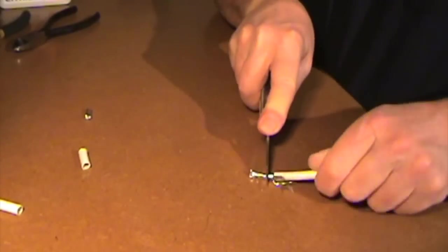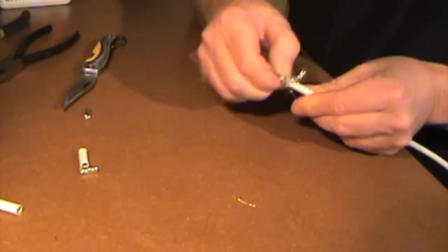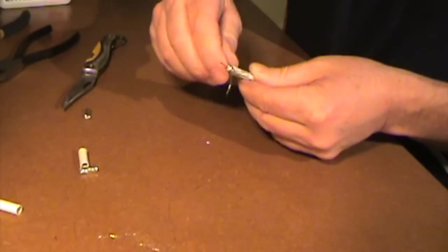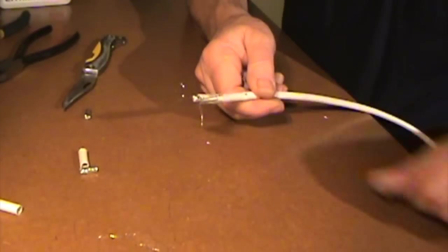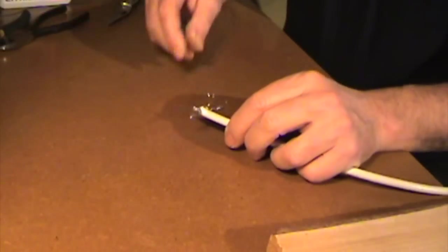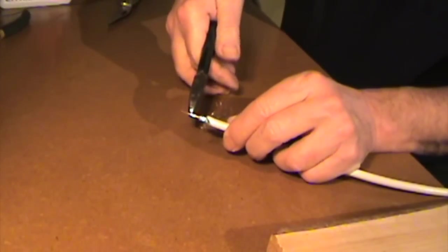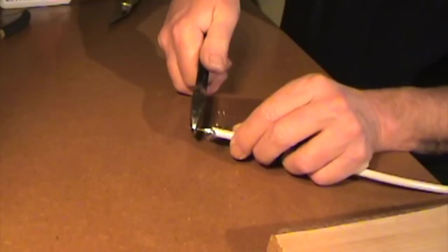Same thing for the other one. Make sure you've got all little broken pieces pulled off. You don't want any short circuits. Then you can trim off the excess.